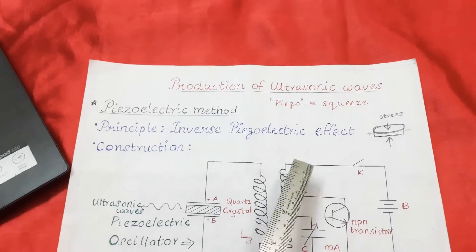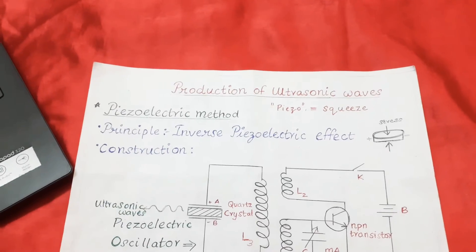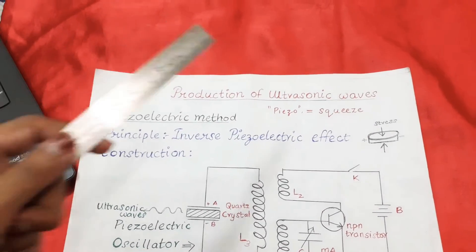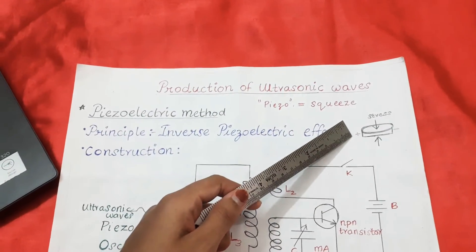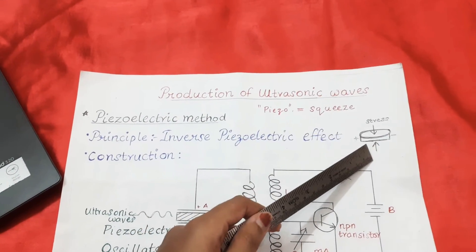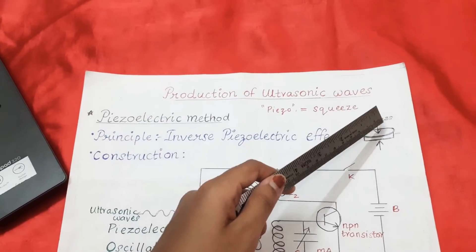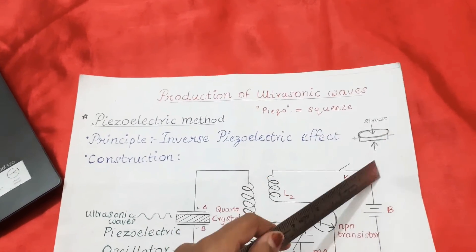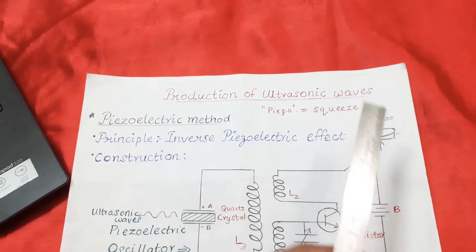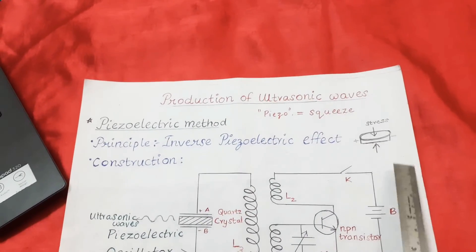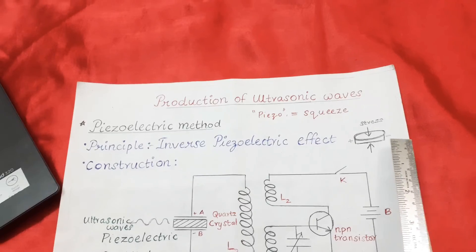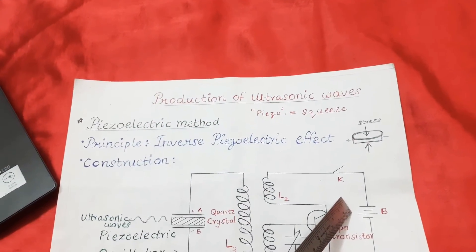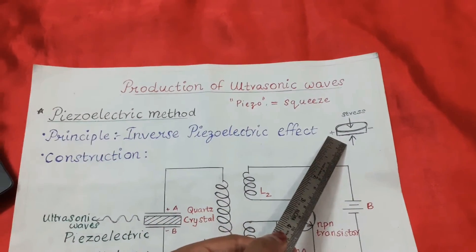Some naturally occurring crystals that display piezoelectric phenomena are quartz, tourmaline, etc. When a suitably cut quartz crystal is subjected to a mechanical pressure along its mechanical axis on its opposite faces, a corresponding electrical potential difference will be induced in the opposite faces, perpendicular to the direction of the applied stress. This is the piezoelectric effect.